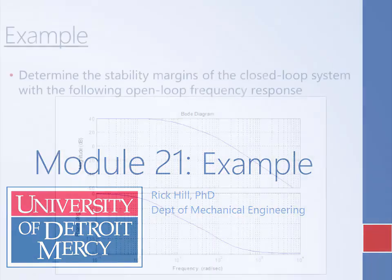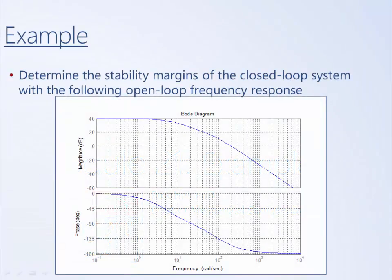At this point we'll go ahead and do an example of trying to estimate the stability margins of a system. Given this system, this Bode plot of the open loop frequency response can be used to estimate the relative stability of the closed loop system.